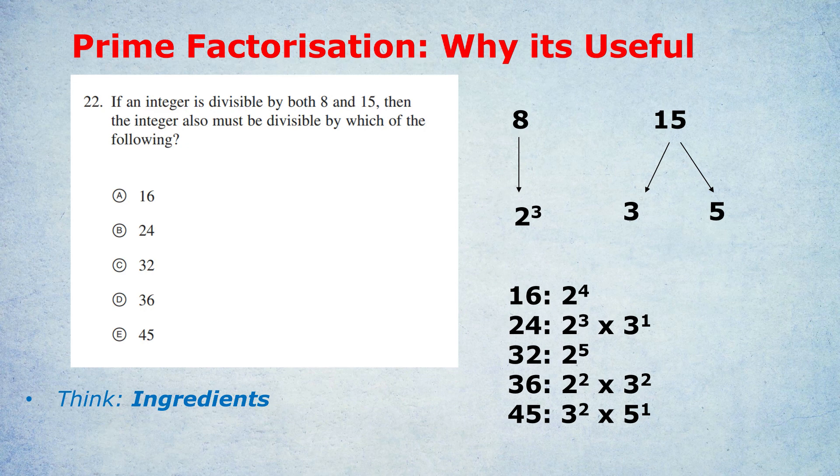What about 24? Well, 24, which I've broken down, has 3 twos and a 3. Does our mystery number have those ingredients? Yes, it does. We know we've got 3 twos because we're divisible by 8, and we know we've got a 3 because we're divisible by 15. Therefore, we're definitely divisible by 24, which is just comprised of 3 twos and a 3. So that's the correct answer, B, because we know we have all the ingredients necessary to make 24.